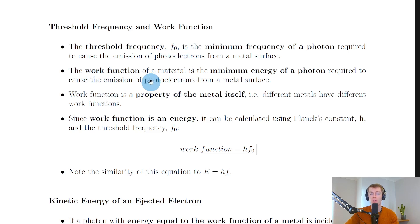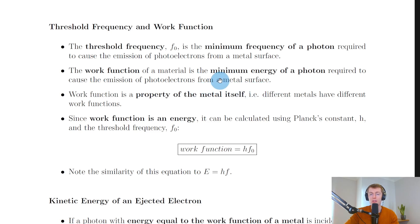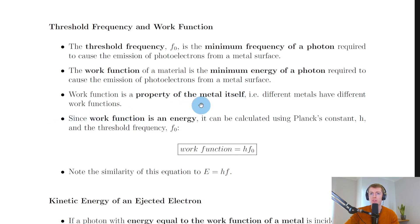The next definition is for work function. We say that the work function of a material is the minimum energy of a photon required to cause the emission of photoelectrons from a metal surface. Again we've got this idea of a minimum, where we're talking about the minimum energy of a photon this time. We say that the work function is a property of the metal itself — i.e. different metals have different work functions.